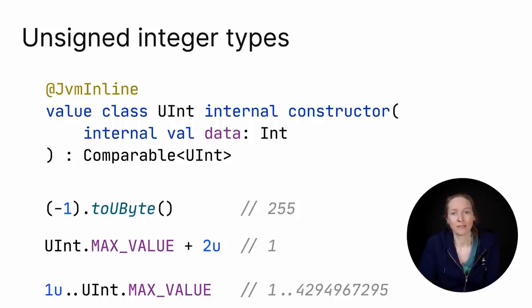Under the hood, each of them is defined as an inline value class, a wrapper of the corresponding integer type. Like in this case, uint is a wrapper over an int value. You can convert a regular integer value to unsigned value by calling a function, like to ubyte or to uint. Alternatively, you can define a constant with a u tag. Arithmetic operations and comparisons are supported for them. Unsigned types were available for a long time in experimental state, and now they became stable. But note that array of unsigned types remains in beta.